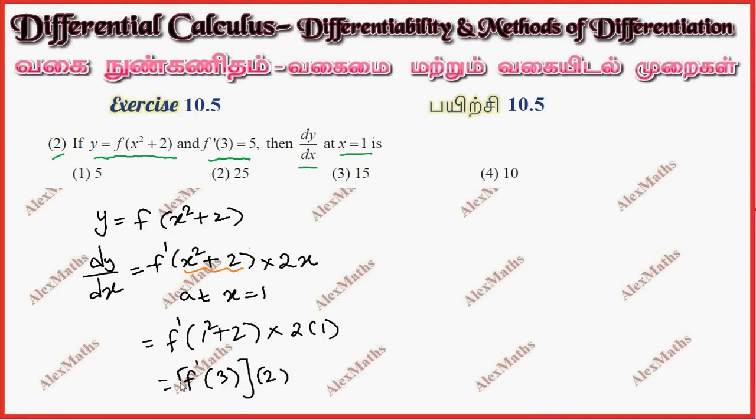Now f dash of 3 value is given in the question - f dash of 3 is 5. So this becomes 5 times 2, total 10. So we get option 4.